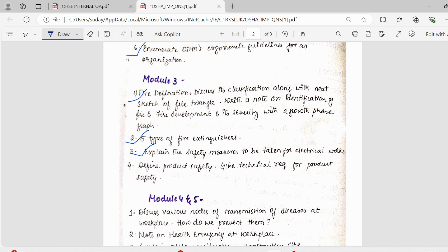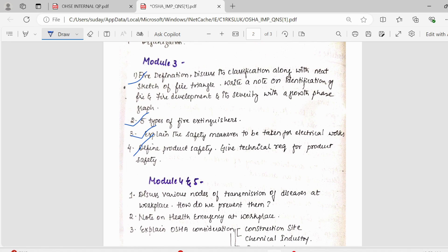What are the electrical hazards, firstly. And what are safety measures to be taken for electrical work, secondly. These two you can cover for electrical. Then, we have product safety, give technical requirements for product safety. Generally, you can write it.